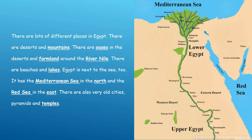There are lots of different places in Egypt. As we can see on this map of Egypt, there are deserts and mountains. There are oases in the desert.